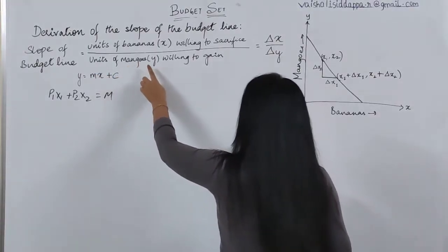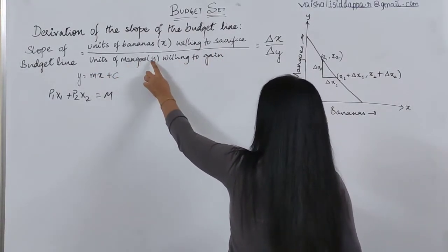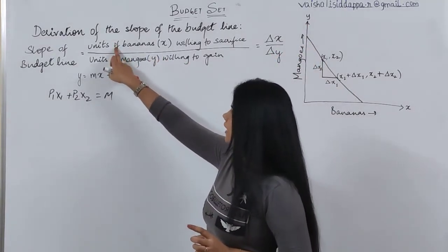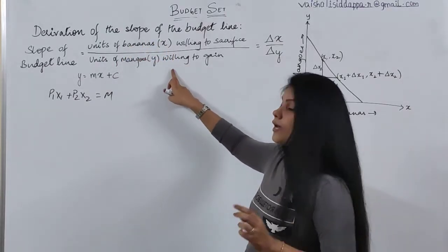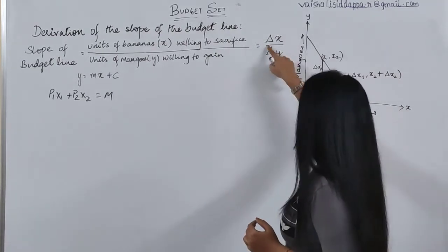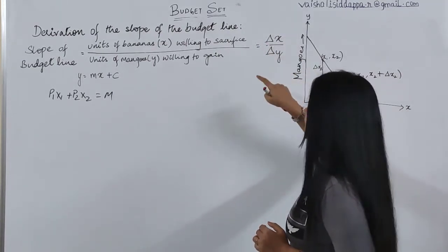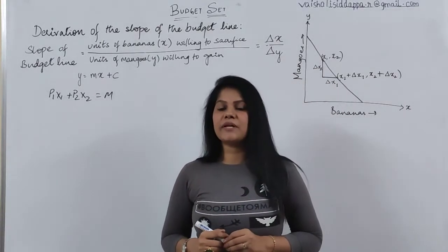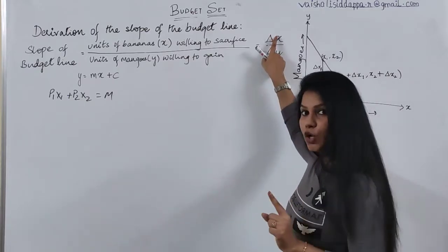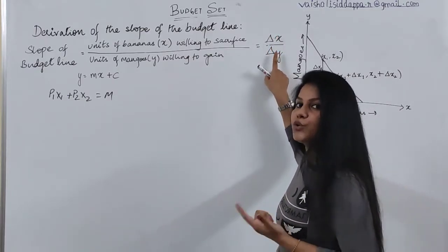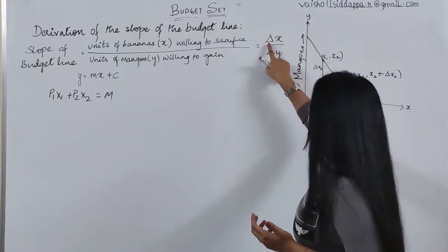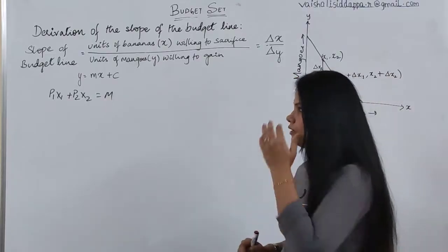The slope equals units of banana (x-axis) you are willing to sacrifice divided by units of mangoes (y-axis) you are willing to gain — to buy extra units of mango. The exact formula is delta x divided by delta y. Delta simply expresses change: if x decreases, y increases, so both are going to change, represented by the delta symbol — change in x divided by change in y.